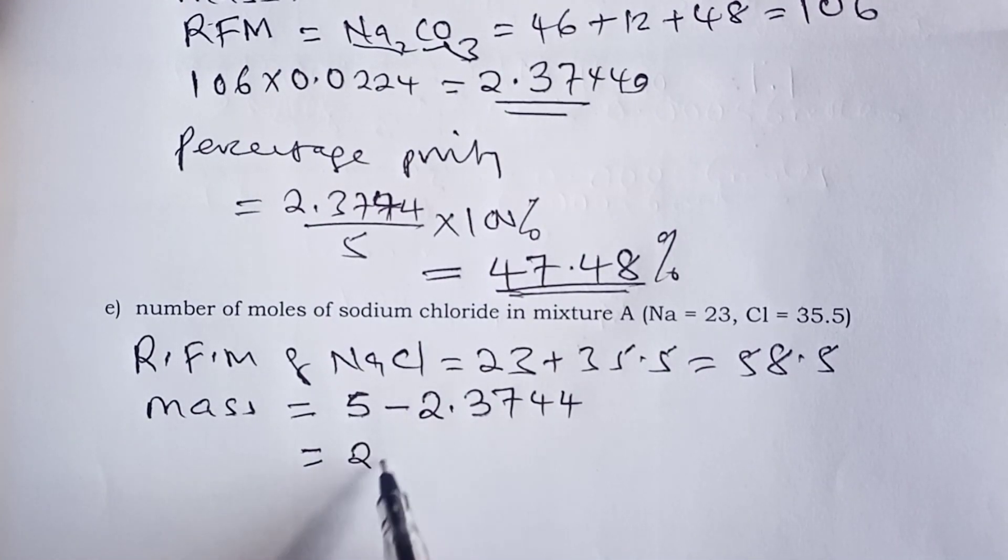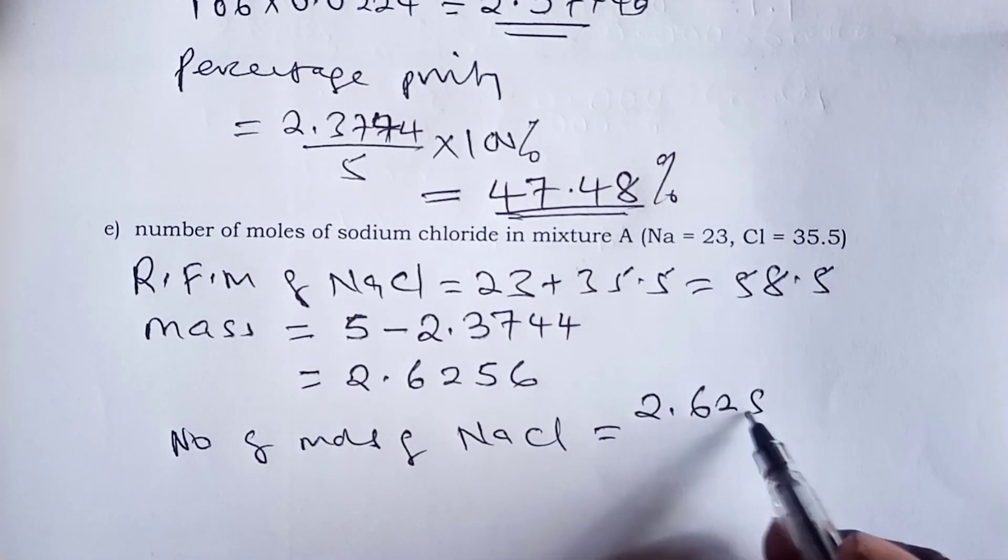From 5, we shall subtract the mass of sodium carbonate, which we got as 2.3744. Therefore, this gives mass of sodium chloride as 2.6256. So with this RFM and the mass, we are simply getting the number of moles of sodium chloride by dividing the mass that we have by its relative formula mass. And that gives us 0.04488 moles as the moles of sodium chloride that were available.